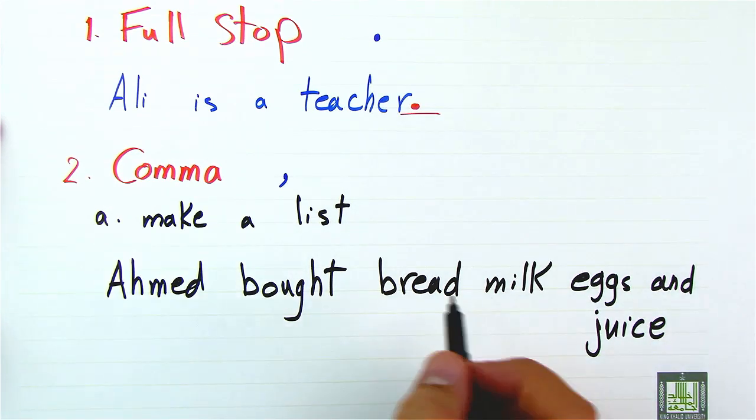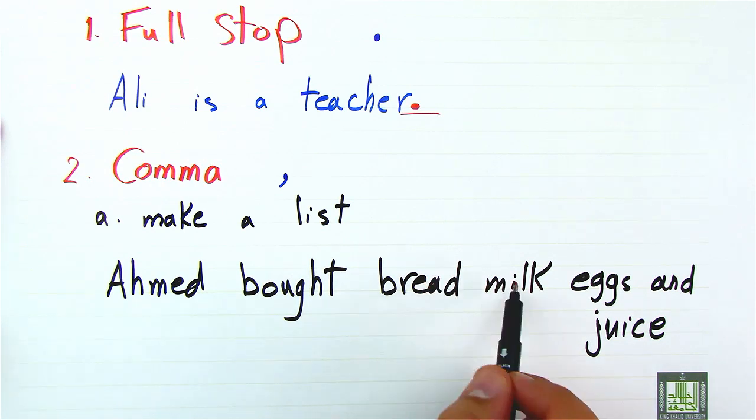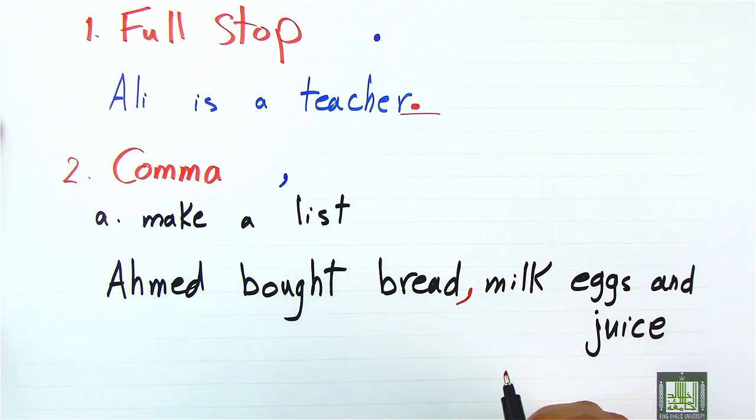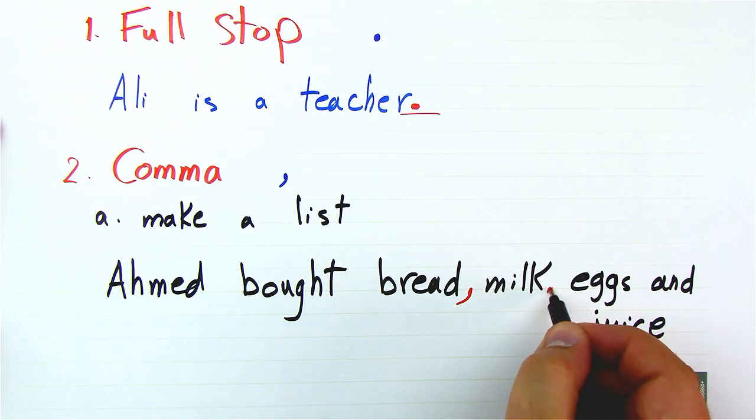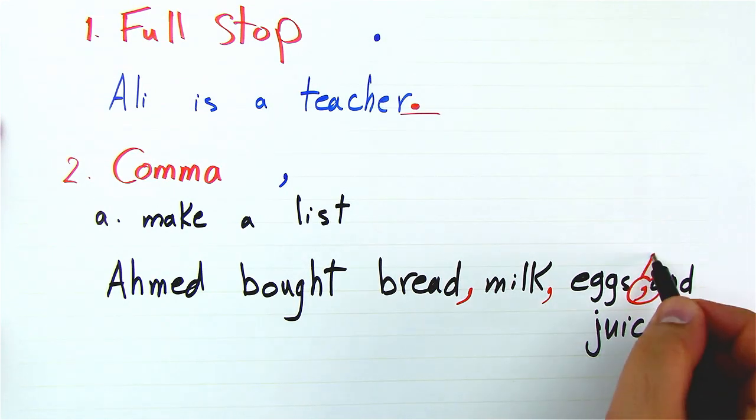Notice that since we have more than two things, we have a list here. After the first one we have a comma, after the second thing we have a comma.